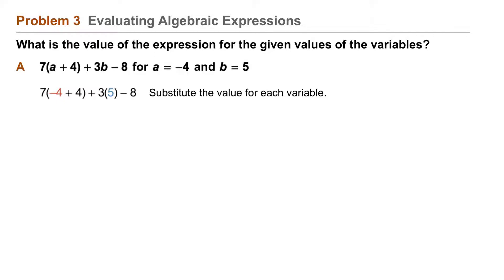This becomes 7(0) + 3(5) - 8. When we perform the operations within the grouping symbols, we then multiply: 0 + 15 - 8.